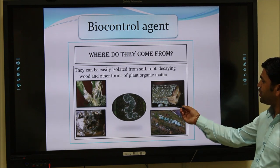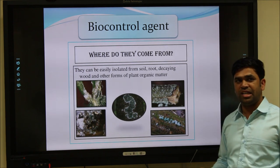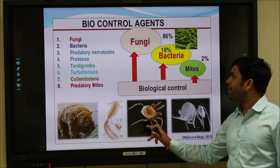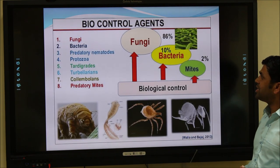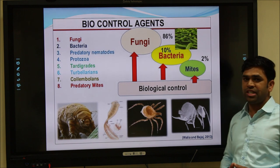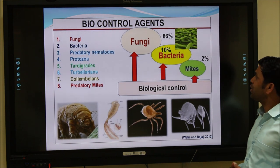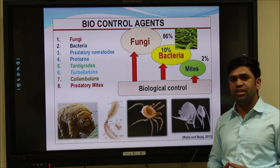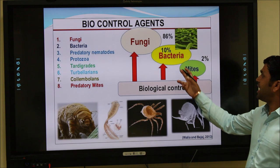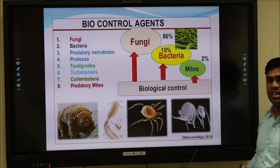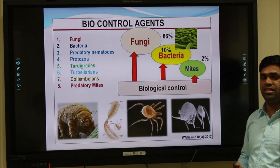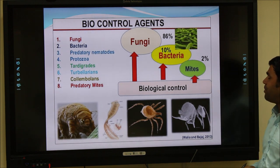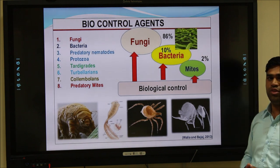This photograph shows from where we can isolate and characterize different biological control agents. It also shows that 86% of fungal genera are used as biological control agents, 10% of bacterial genera can be used as biological control agents for different pathogens, and mites account for only 2% of biological control agents.